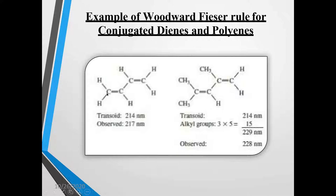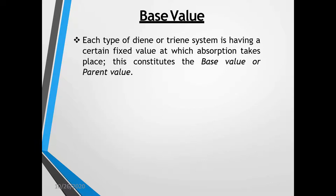For example, this is 1,3-butadiene. There are hydrogen atoms attached to this and this is considered as a basic value. If these hydrogen atoms are substituted by other substituents — as you can see here, there are 3 alkyl groups substituted on the 1,3-butadiene — then the presence of these substituents on this diene system is taken into consideration to calculate the lambda max value for that particular compound.